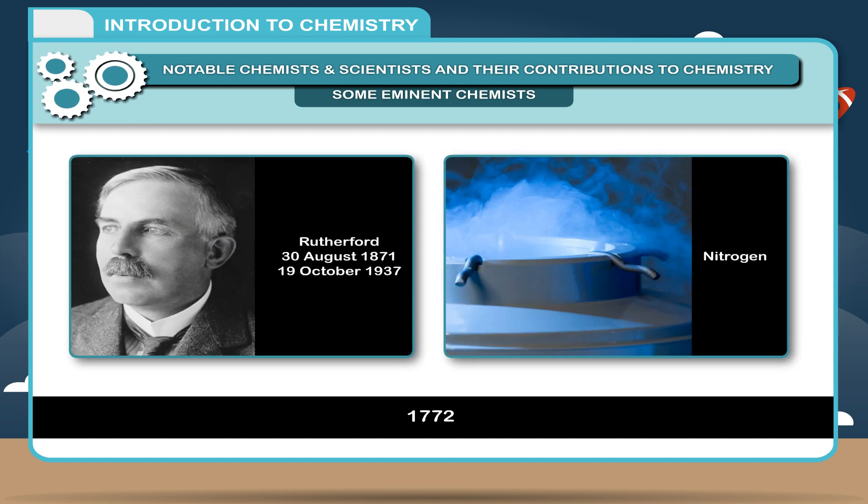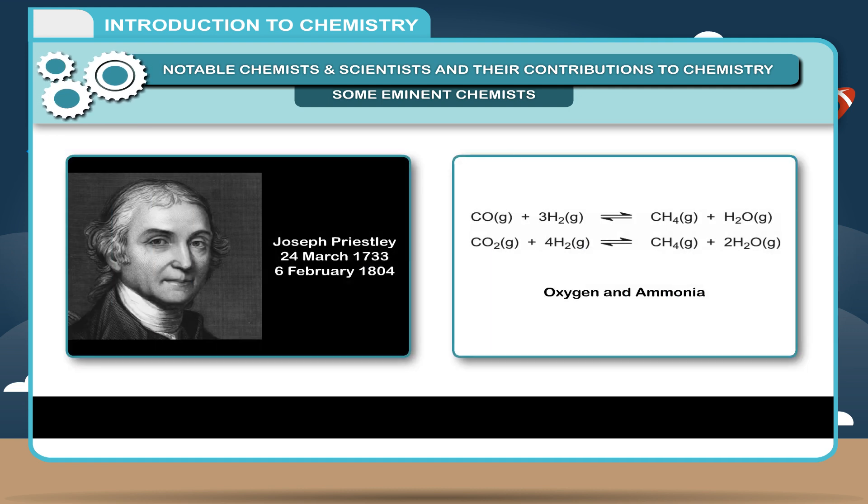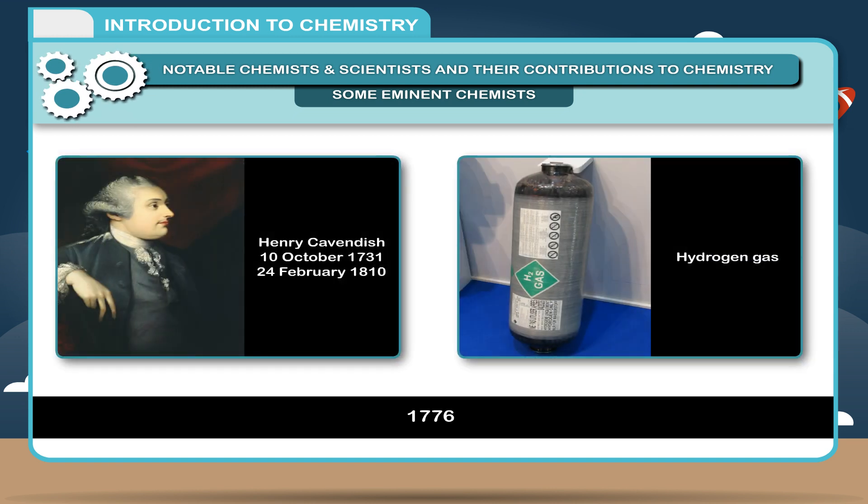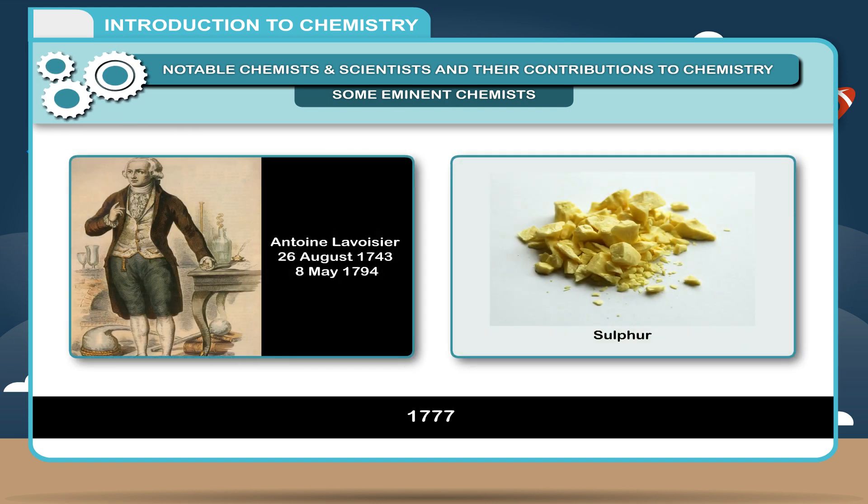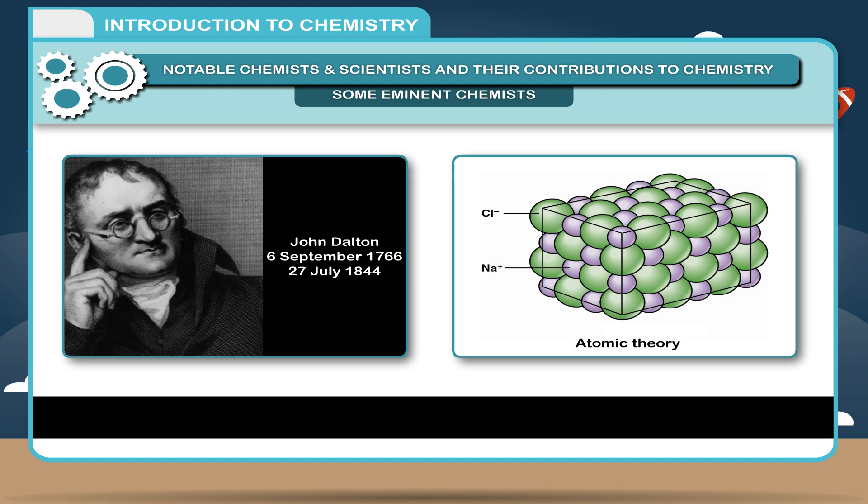1772, Rutherford discovered nitrogen. 1774, Joseph Priestley discovered oxygen and ammonia. 1776, Cavendish prepared hydrogen gas. 1777, Lavoisier found that sulphur is an element.